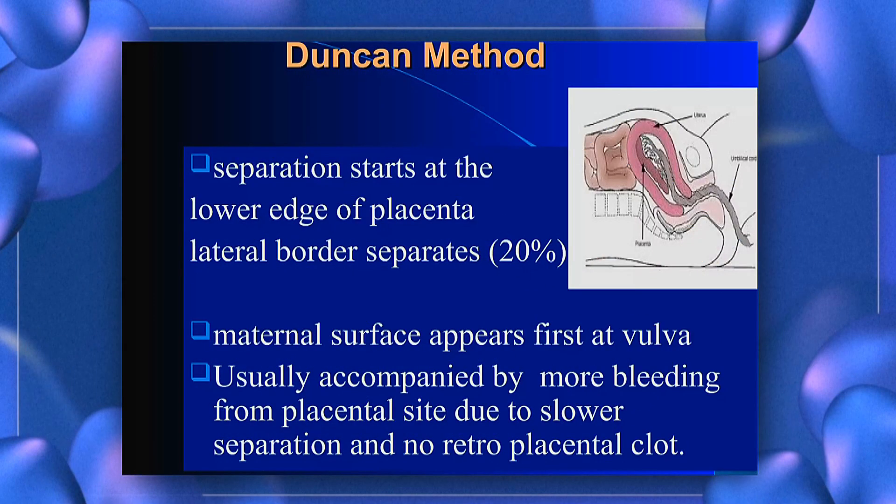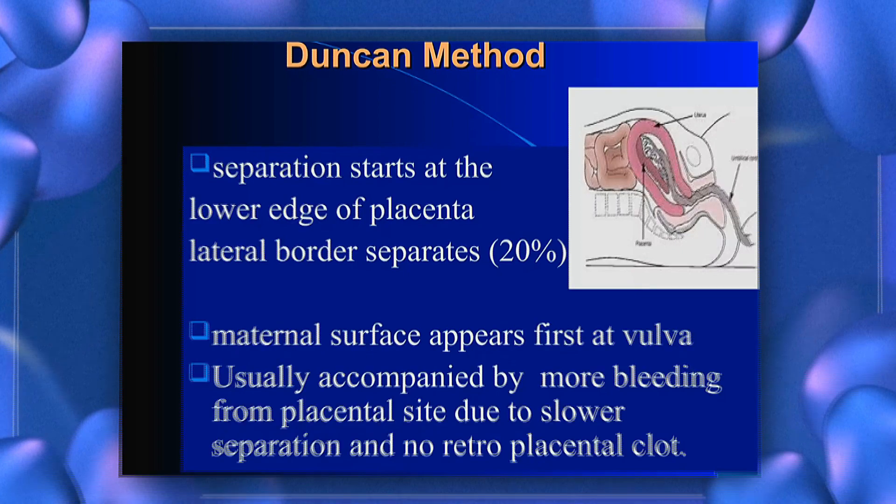In Duncan's method, separation starts at the lower edge of the placenta with the lateral border separating first. The maternal surface appears first at the vulva, usually accompanied by more bleeding from the placental site due to slower separation and no retroplacental clot formation.